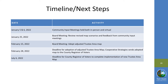In terms of the timeline going forward and next steps: on January 25th, there will be a board meeting where the board will review the map scenarios and receive feedback from community input meetings. On February 15th, there will be a board meeting where the Board of Education will adopt an adjusted trustee area map. The deadline for adopting an adjusted map is February 28th. The deadline for the county registrar of voters to complete implementation of the new trustee map is July 6th, in order to be ready for the November 2022 election.